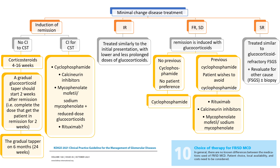If the patient is steroid-resistant from the start — meaning no response to glucocorticoids used for 16 weeks — treat similarly to glucocorticoid-refractory focal segmental glomerulosclerosis. You may need to re-evaluate the patient for other causes, especially FSGS, and consider redoing the renal biopsy.